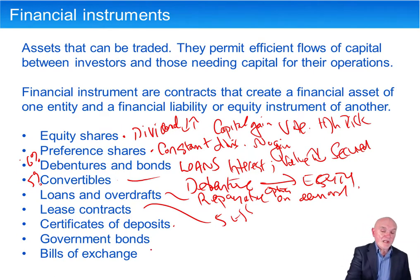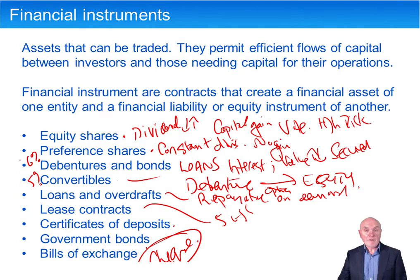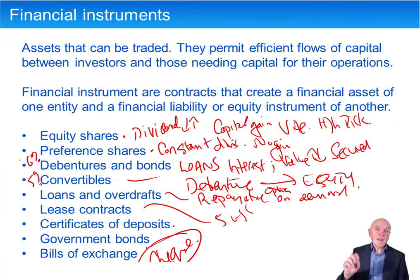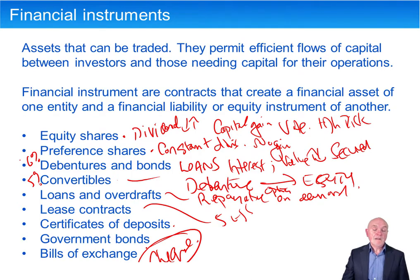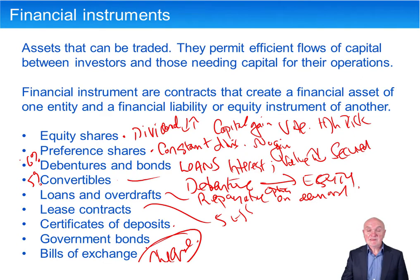And finally, a bill of exchange — similar to a cheque. It was used particularly in imports and exports. I can write a bill of exchange — basically an order to my bank to pay my supplier a certain amount, maybe in three months' time. Its use is falling a little now because of internet transfers, but it's a way of transferring money between buyers and sellers.